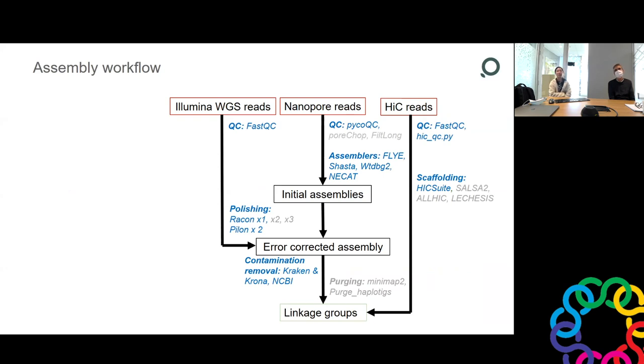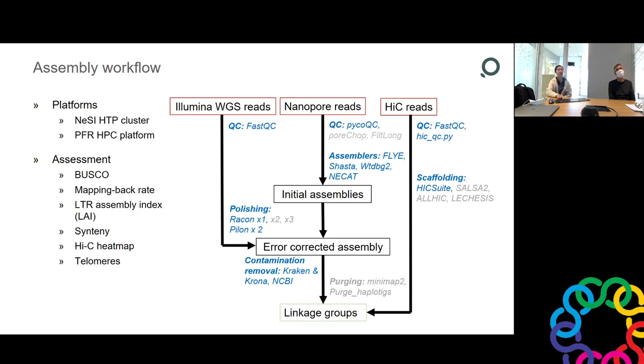However, we still decided to go for the typical genome assembly workflow. Back at the time, it was very popular to assemble the nanopore reads to the genome assembly. So basically, the first step was the QC step to quality assess the different type of reads. And then the nanopore reads was assembled using multiple assemblers to compare with the outcomes. And then we selected the best initial assemblies for polishing, contamination removal, and also for the final step to use the Hi-C data to assign the contigs down to the chromosome level. So all the analysis was done on NeSI cluster as well as the internal PFR cluster. And we also looked at BUSCO scores, mapping back rate, LAI, synteny, Hi-C heat map, and also telomeres to assess our assemblies.